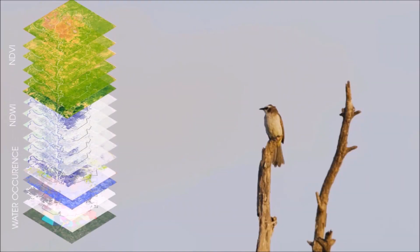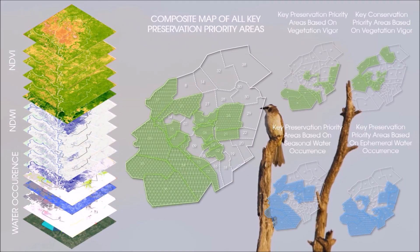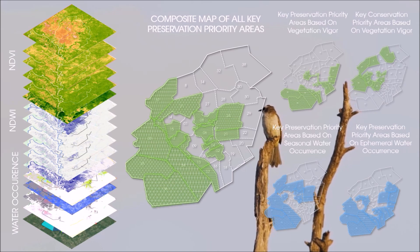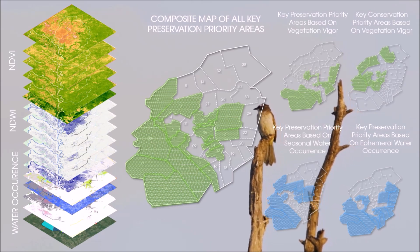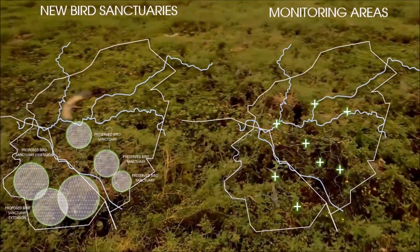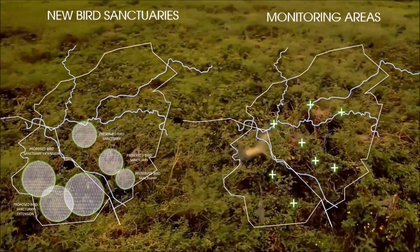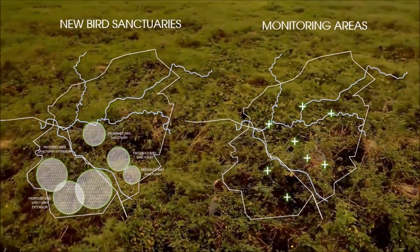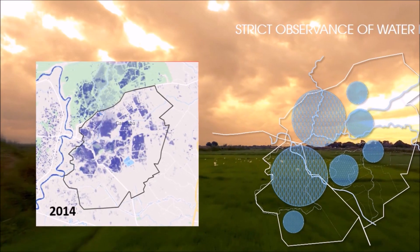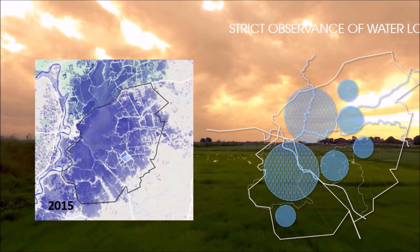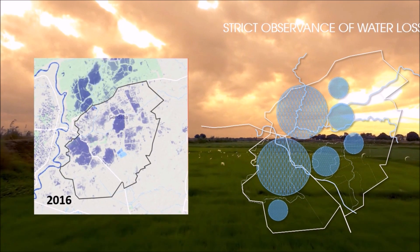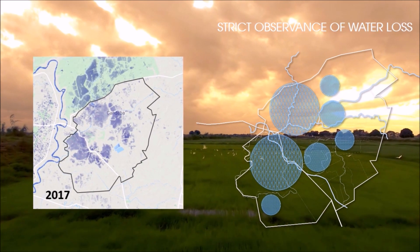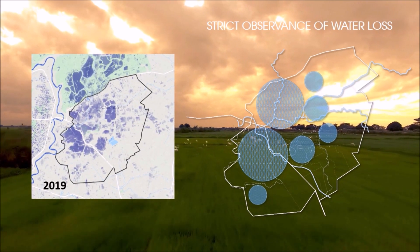To summarize, composite maps were made to better inform local policies. This may guide us in identifying strategic locations for new bird sanctuaries and monitoring areas, or perhaps locate areas that demand more strict observation of water loss.